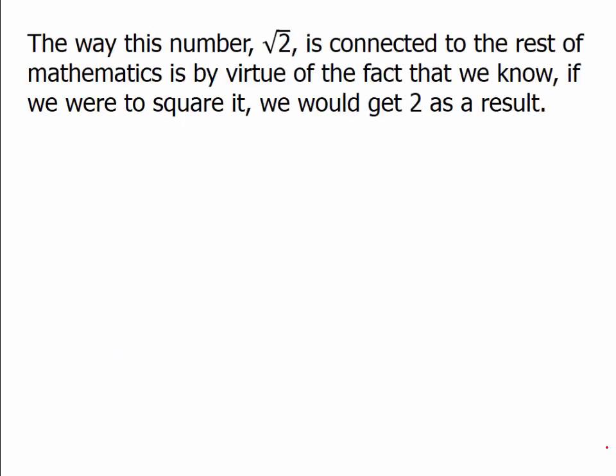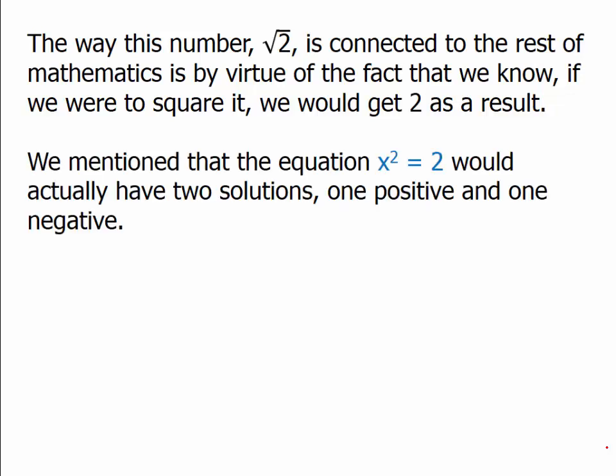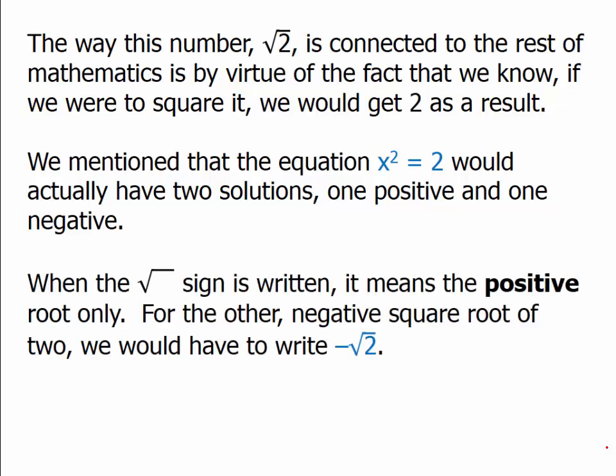Square root of 2 is connected to the rest of mathematics by virtue of the fact that by definition, if we were to square it, we would get 2. The equation x squared equals 2 actually has two solutions, one positive and one negative. When the square root sign is written, it means the positive root only. If we wanted to talk about the negative root, we would have to write a negative sign and say negative square root of 2.